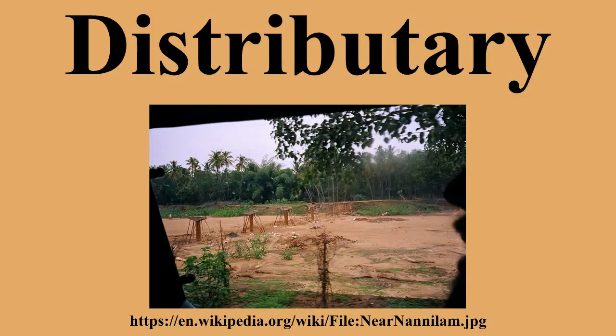In New Zealand, the country's second longest river, the Clutha River, splits into two arms — the Matau and the Koau — some 10 kilometers from the South Island's Pacific coast. A large island, Inch Clutha, lies between the two arms. Many of the rivers crossing the Canterbury Plains in the central South Island are braided rivers, and several split into separate branches before reaching the coast. Notable among these is the Rangitata River, the two arms of which are separated by the low-lying Rangitata Island.